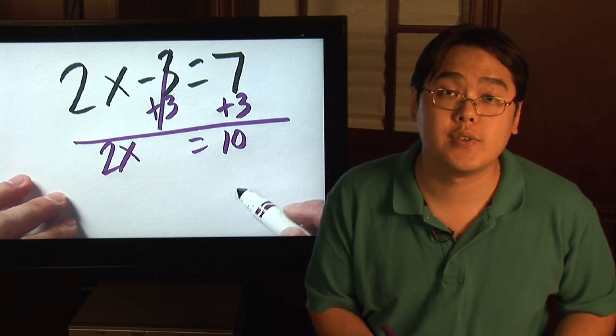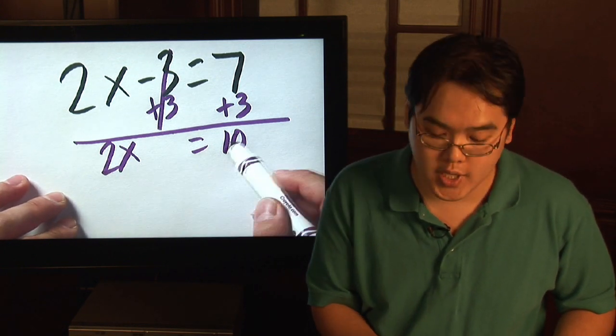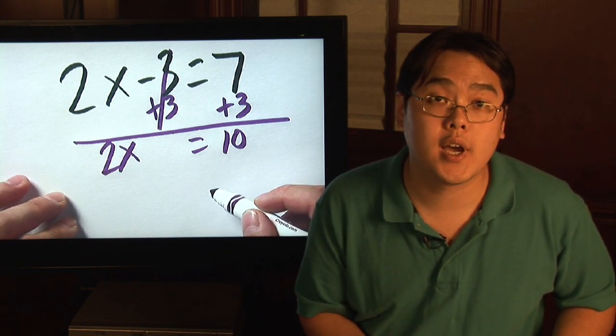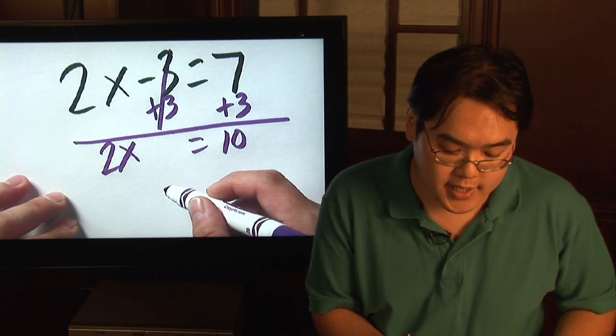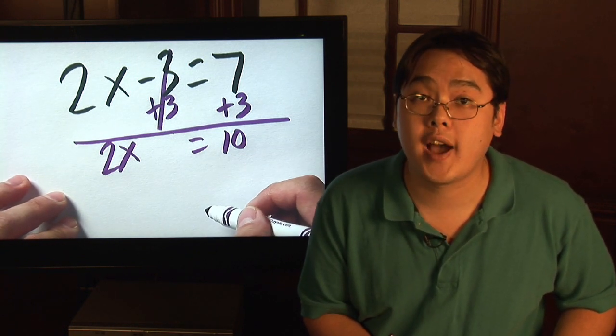And then all you have to do is ask yourself, well, 2 times what number is going to give you 10? Well, if you're pretty solid in your multiplication tables, you know immediately that x is going to be 5.